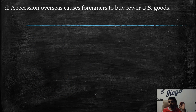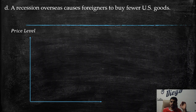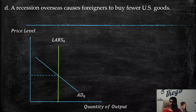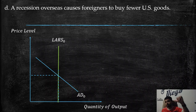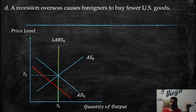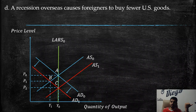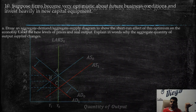Part d: A recession overseas causes foreigners to buy fewer US goods. Exports are immediately affected, keeping other variables constant. Net exports decrease, so aggregate demand shifts to the left. As a consequence, we have lower prices and lower quantity produced.